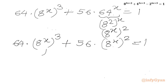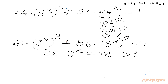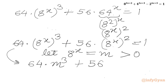Now we will use the substitution 8^x = m. For real x, m must be greater than 0, i.e., positive. Writing the equation in m: 64m³ plus 56m² equal to 1.